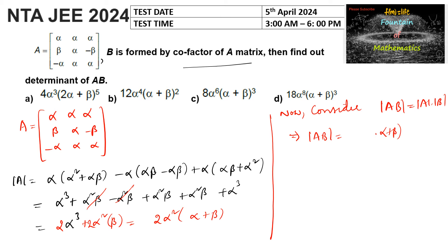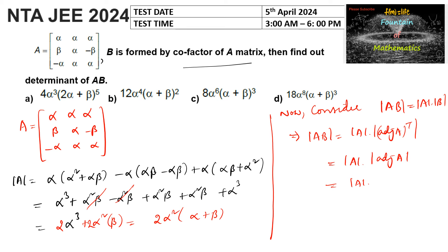Let us simplify this. We can write det(A) times det(B). Since B is formed by the cofactors of matrix A, we can say B equals adjoint of A transposed, so det(B) equals det(adjoint of A). The determinant of the adjoint of A equals det(A) to the power of n minus 1. Here we have a 3×3 matrix, so n equals 3, giving det(A) times det(A) to the power of 2, which is det(A) cubed.